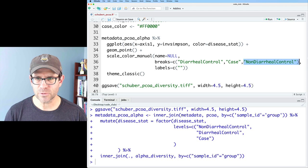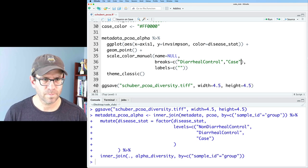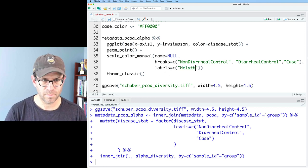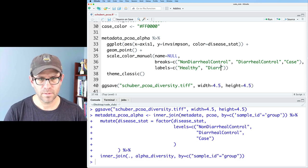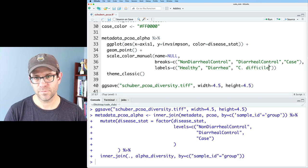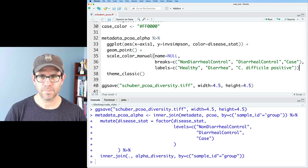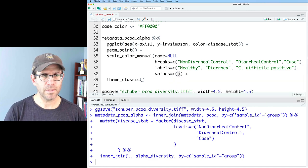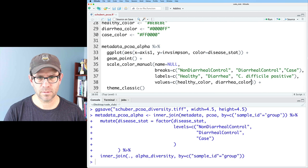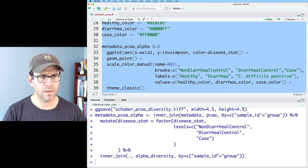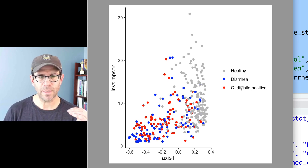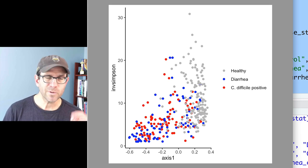So then I want non-diarrheal control first case. And then my labels are going to be healthy, diarrhea, and I'll do C difficile positive. And then I'll add that values are going to be these values. So I'll do healthy color, diarrhea color and case color, and let's give this another run. And we see that we've got healthy first diarrhea, second C difficile positive third, and that we've got our coloring as we'd like it.